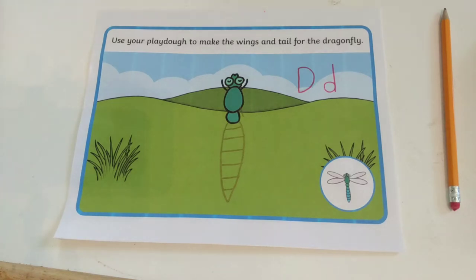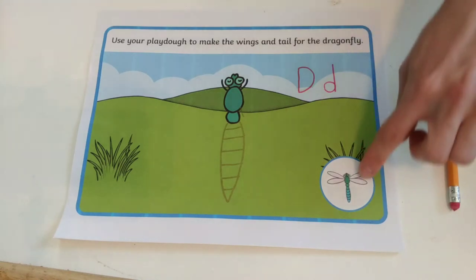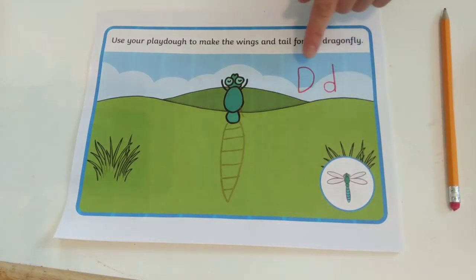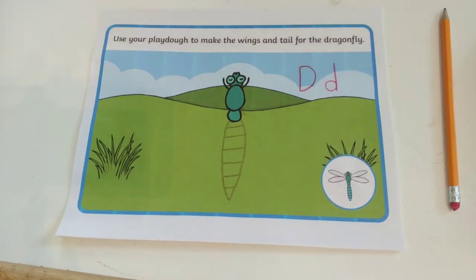This first picture is a picture of a dragonfly. Dragonfly begins with the letter D — capital D, lowercase d.